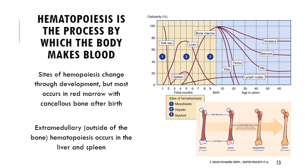Into adulthood, hematopoiesis happens more in the vertebrae, sternum, and ribs. Extramedullary hematopoiesis means hematopoiesis occurring outside the medullary cavity — not inside the bone — such as in the liver and spleen. Even though that drops off after birth, it can continue if bone marrow is compromised, like with different types of cancer. The liver and spleen can compensate by resuming hematopoiesis. Some blood cells also develop in the lymph nodes.